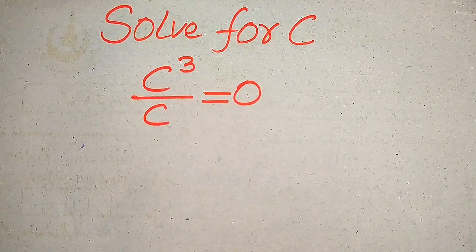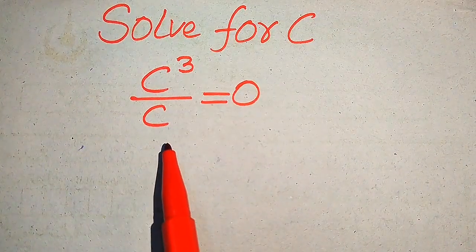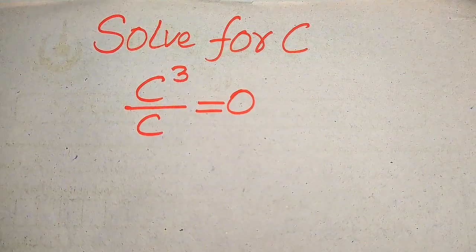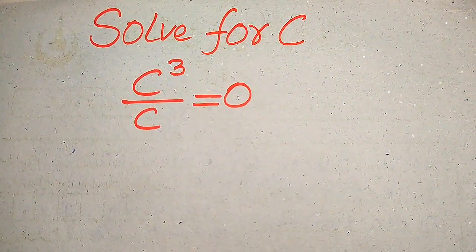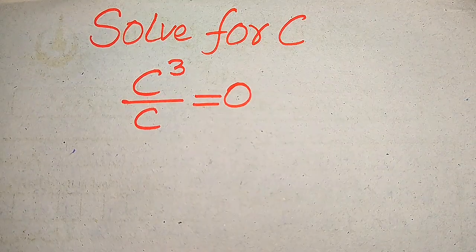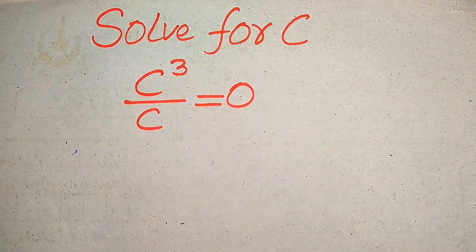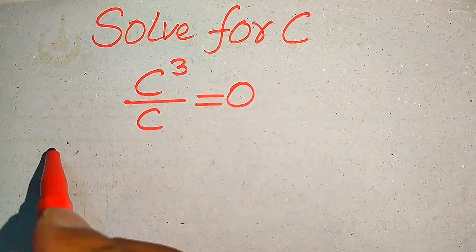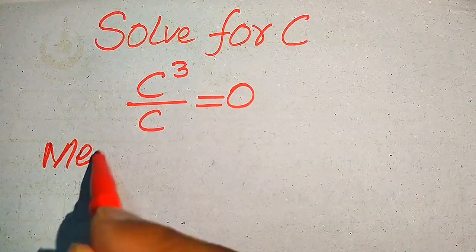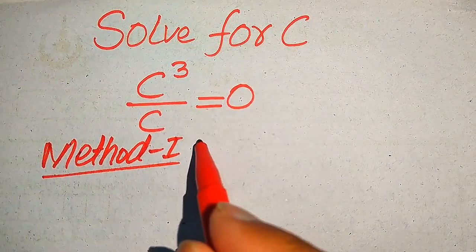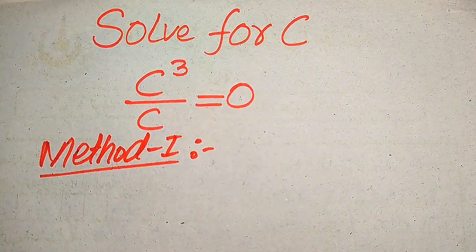Hello everyone. How to solve this problem for the values of c if we have c cubed divided by c equals 0, and we solve this for all the values of c, or all the roots of c. First we find all the roots of this equation, and at the end we will verify which of the roots satisfy the given equation and which are extraneous roots. We will solve this problem using two methods.